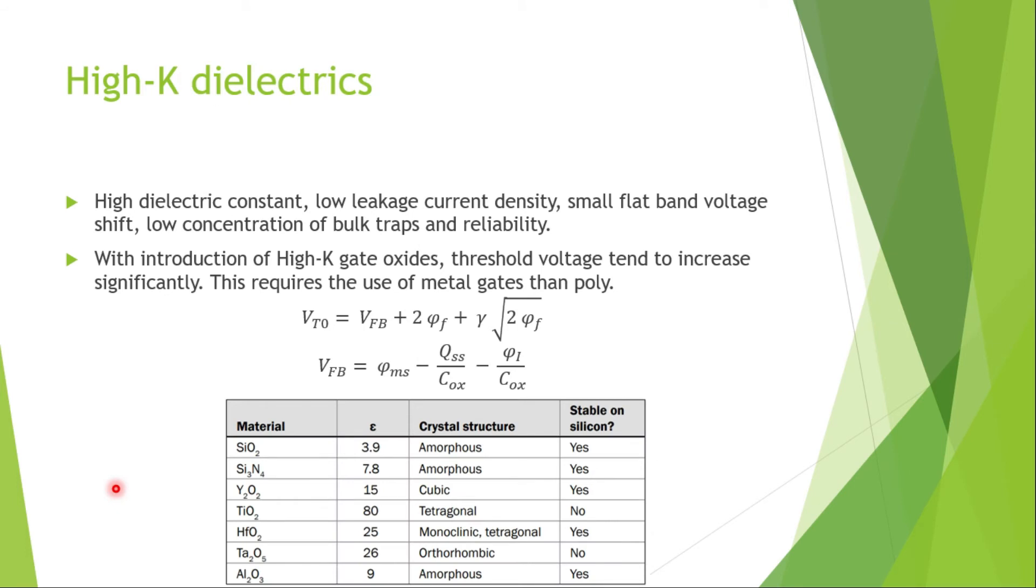So the properties of high-K dielectric, some of the important properties are: high dielectric constant, low leakage current density, small flat band voltage shift, and low concentration of bulk traps and reliability.